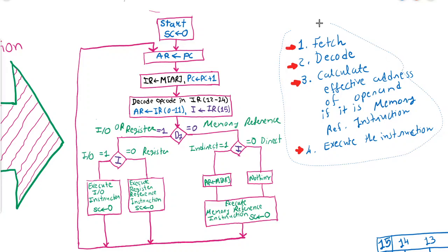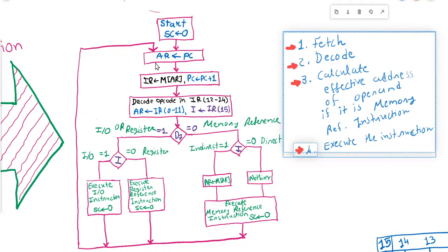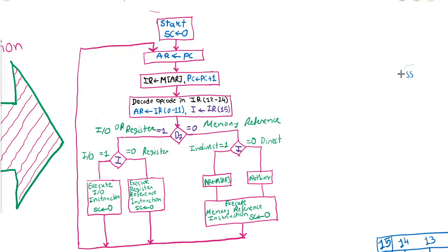Let me explain with a figure. The starting address will be stored into the address register. If you recall the common bus architecture, the address register is directly connected with the memory. So whatever starting address is there, it will be stored into the address register, and then using that address, the instruction will be fetched into the instruction register.